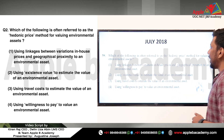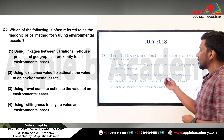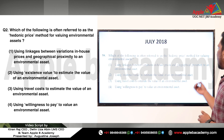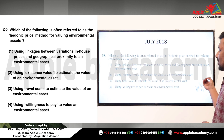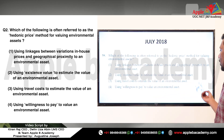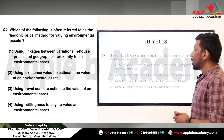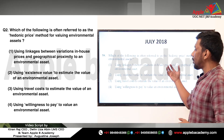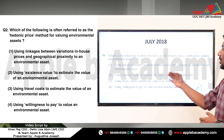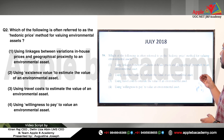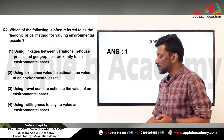This question was asked in July 2018: 'Which of the following is often referred to as the hedonic price method for valuing environmental assets? (1) Using linkages between variations in house prices and geographical proximity to an environmental asset, (2) using existence value, (3) using travel cost, (4) using willingness to pay.' Option 2 and 3 are not correct; option 4 is only partially correct. The correct answer is option 1 — using linkages between variations in house prices and geographical proximity to an environmental asset.